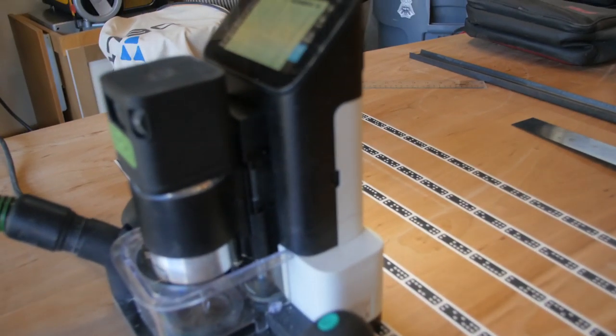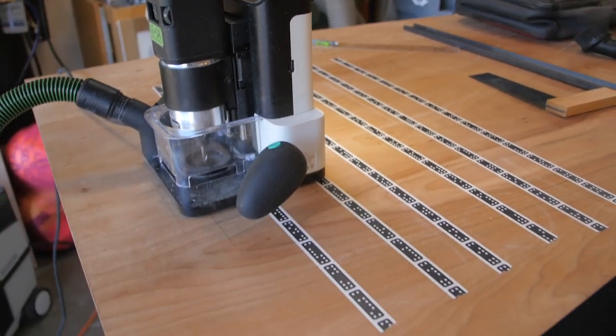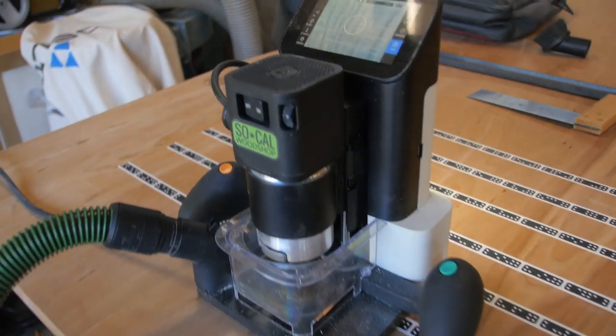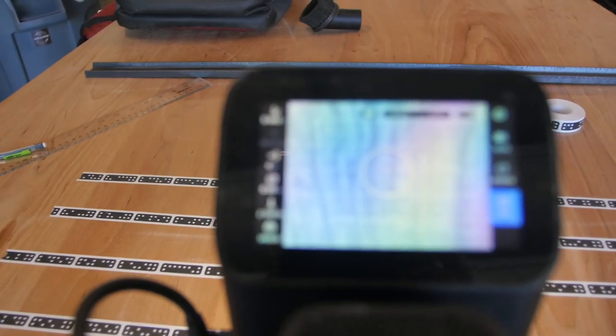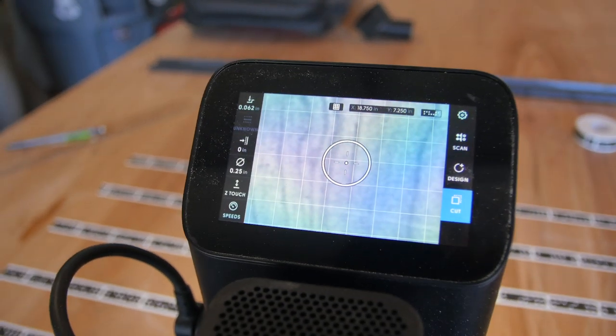Then we used the Shaper Origin, which is this handheld CNC router, to put a couple things into the tabletop. Number one being the drop-in insert where they can plug in their laptops and all that type of stuff.